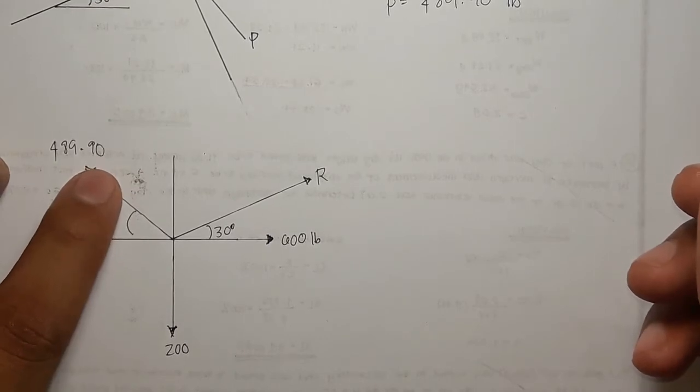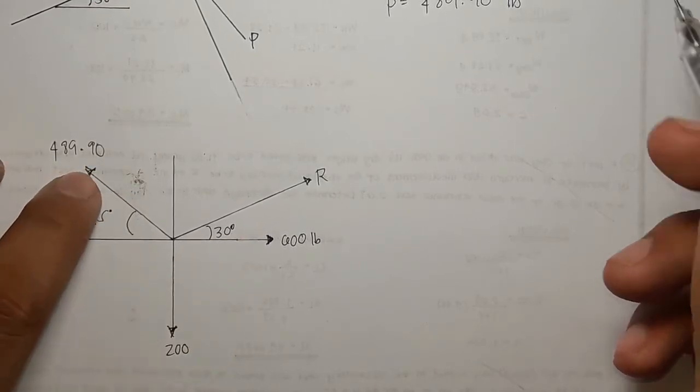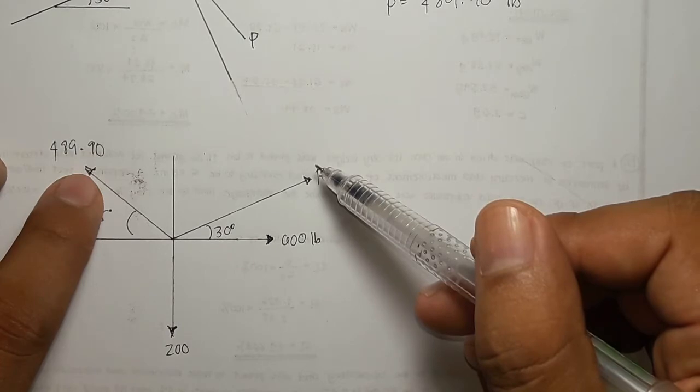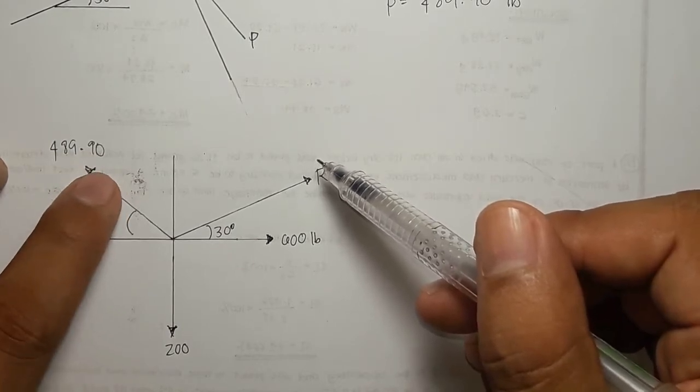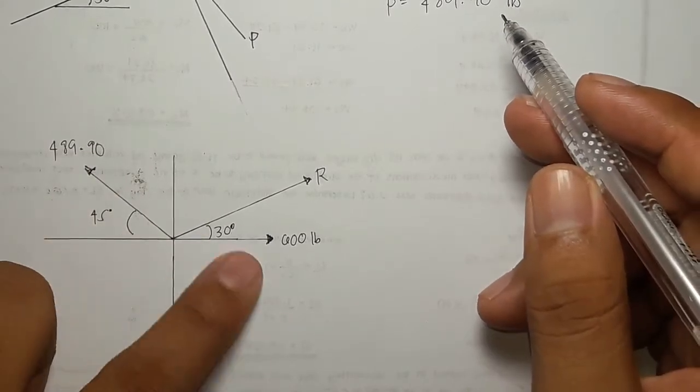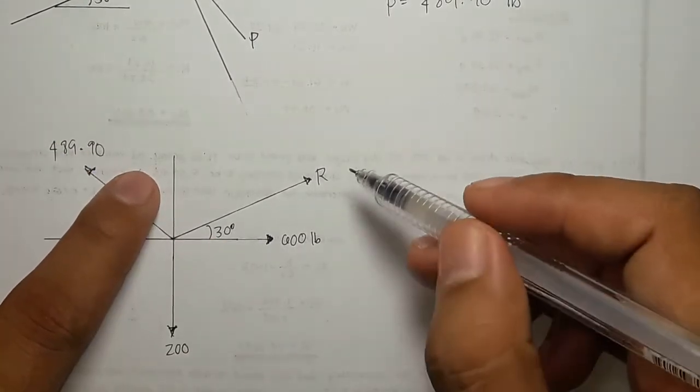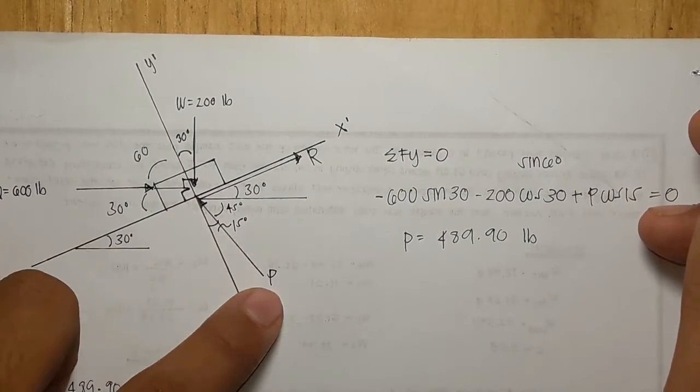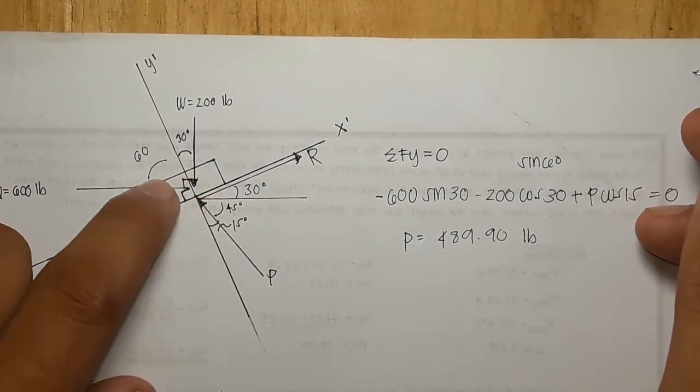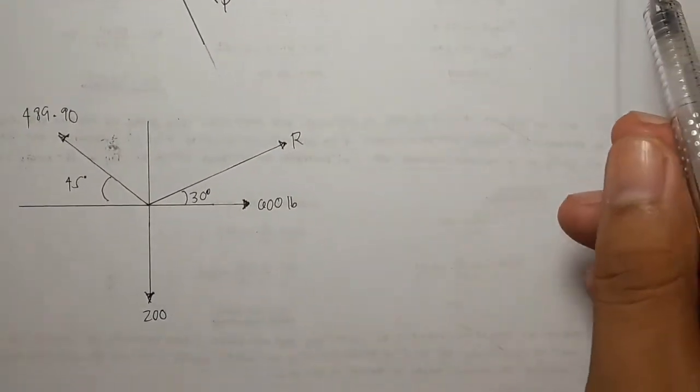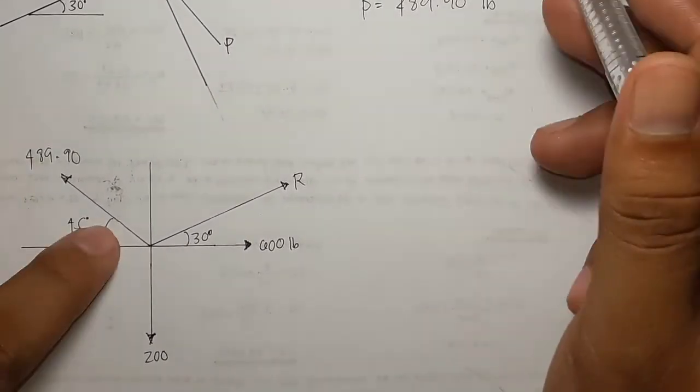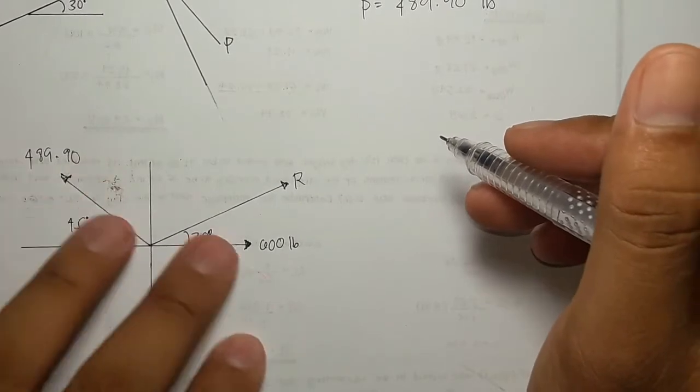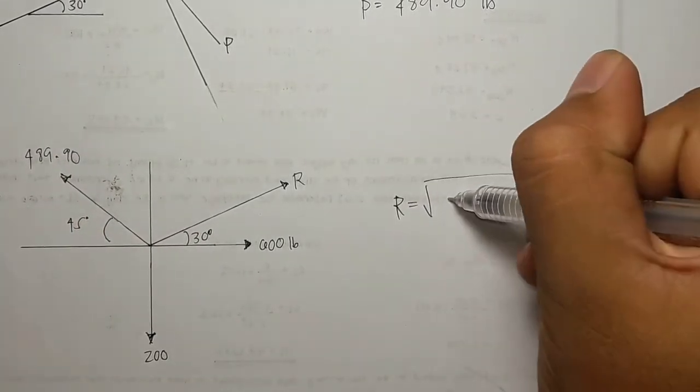I already made a tutorial on how we can get this R. I will put the link below so you can review it. But in this case it is now easy because we already found the P. In the first figure it is difficult because we don't have the P. Now we can look for R by summing up, by using this.